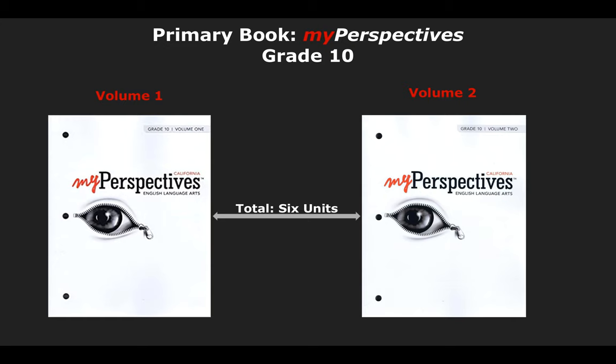The primary books to be used this year are 'My Perspectives,' conducted in two volumes — Volume 1 for Semester 1 and Volume 2 for Semester 2. It covers English language arts from British, English, or American literature. The two books total six units: three for the first semester and three for the second.